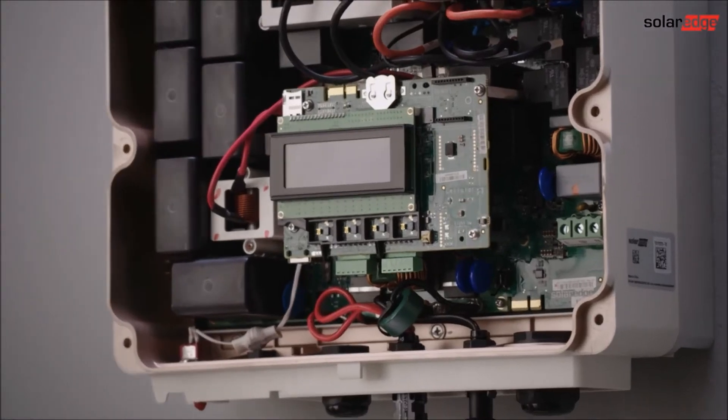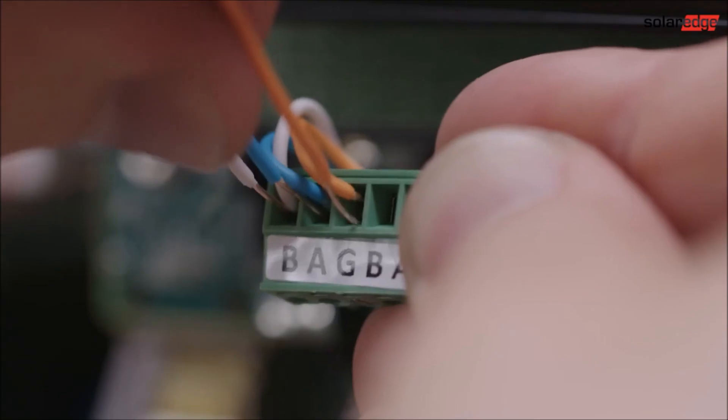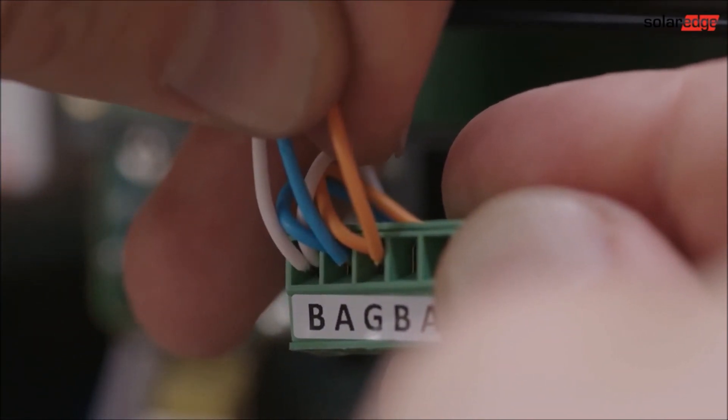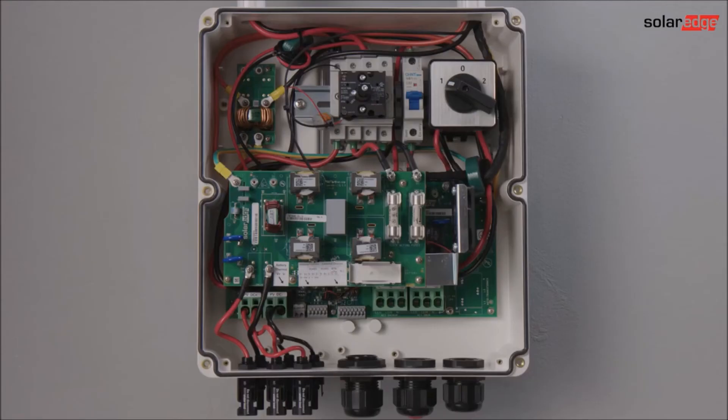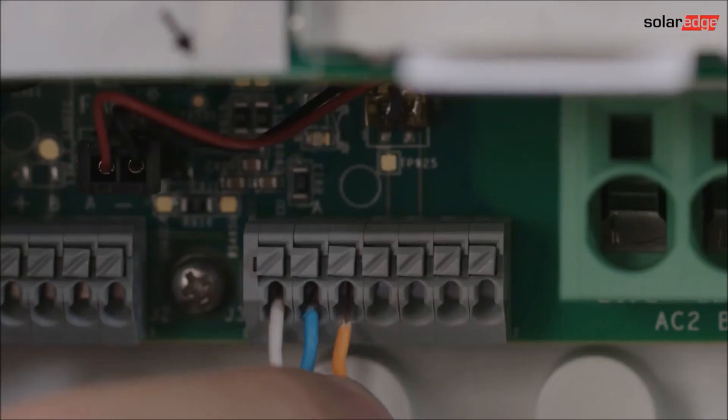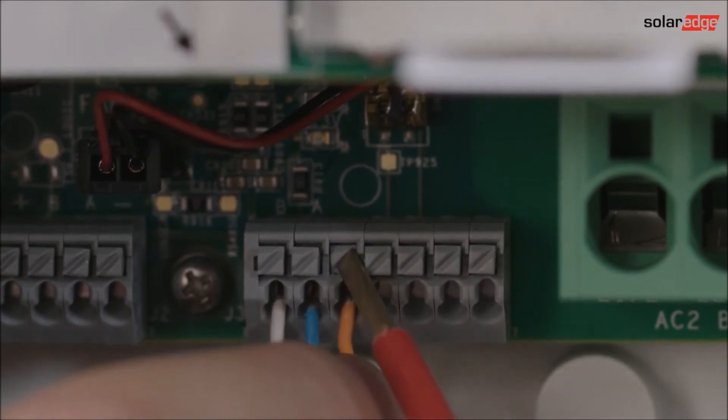In a storage interface system the meter and interface connect to the same inverter RS485 terminals. In the storage inverter system the meter connects to the RS485 port of the connection unit at the bottom of the inverter.